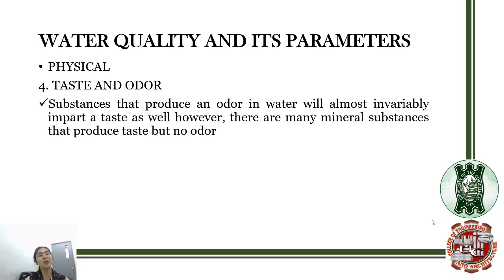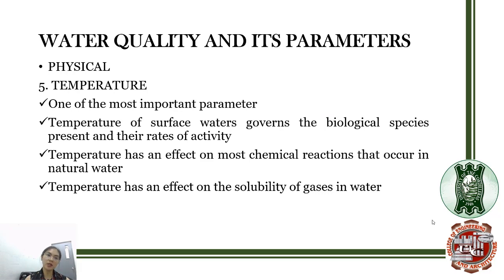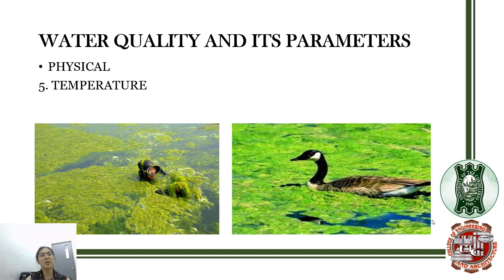The next physical parameter is taste and odor. Substances that produce an odor in water will almost invariably impart a taste as well. However, there are many mineral substances that produce taste but no odor, which is why they are grouped together as a physical water quality parameter. Another physical property is temperature, which is one of the most important parameters. Temperature of surface water governs the biological species present and their rates of activity, affects most chemical reactions in water, and also affects the solubility of gases in water.